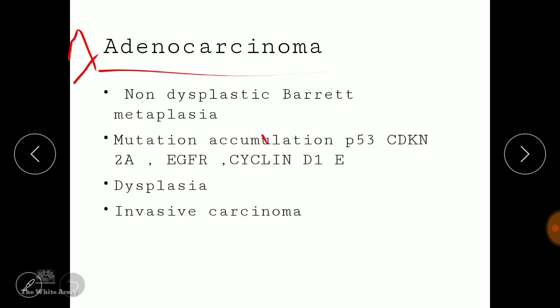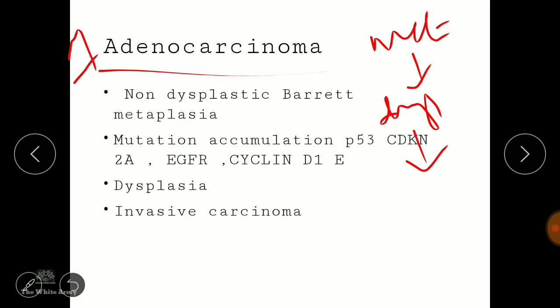Whenever there is Barrett's esophagus, there is metaplasia which may turn into dysplasia, and which may cause accumulation of mutations — including p53, CDK4, CDKN2A, EGFR, Cyclin D1, and Cyclin E — leading to invasive carcinoma.